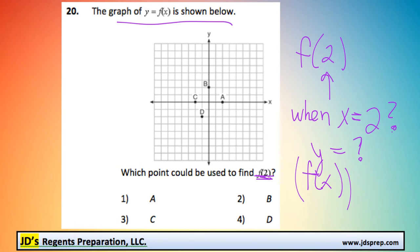So when x equals 2, well that just means we need to find out which one of these four points has an x value of 2. And we can see quite quickly that it's A.